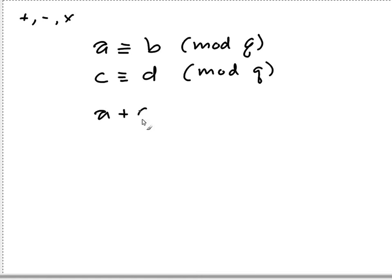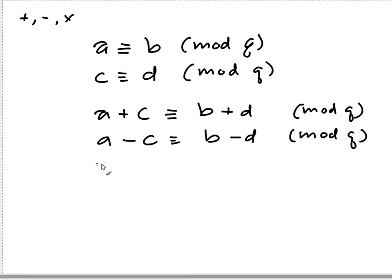you can say A plus C equals to B plus D mod Q. You can say that A minus C equals to B minus D mod Q. And you can also say that A times C equals to B times D mod Q. So with this, you can do all these three operations with integers.